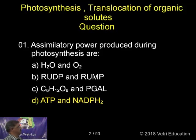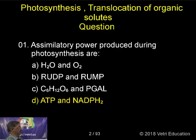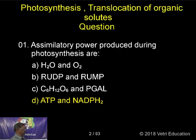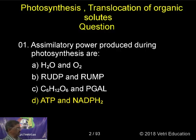The first question is: Assimilatory power produced during photosynthesis are — A: H2O and O2, B: RUDP and RUMP, C: C6H12O6 and BGAL, D: ATP and NADPH2. The correct answer is D, ATP and NADPH2.